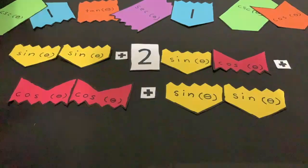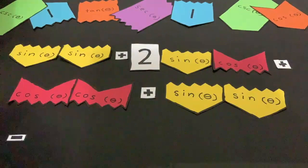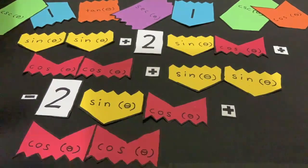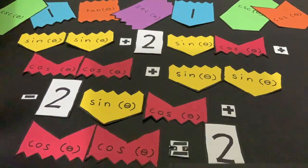Plus sine theta times sine theta minus 2 sine theta cos theta plus cos theta times cos theta. And as we said before, all of this is equal to 2.